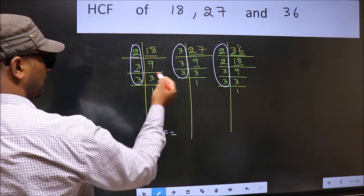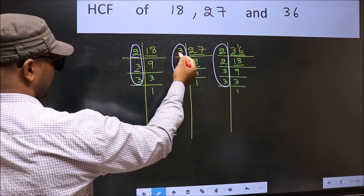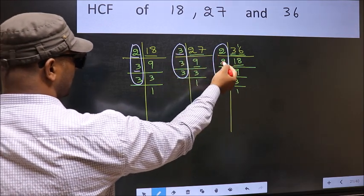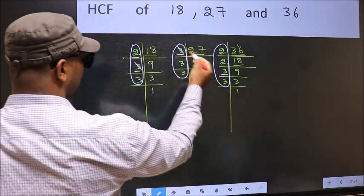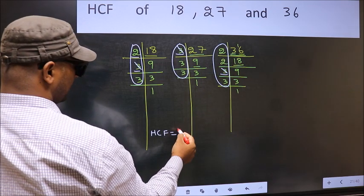Next number 3. Do we have 3 here? Yes. So go to the other place. Do we have 3 here? Yes. So cut 3 and write here.